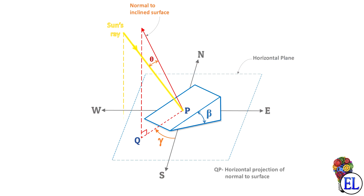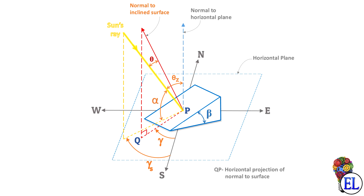Now let us represent all the angles studied in this video together. Taking the horizontal projection of the sun's ray gives the inclination angle alpha. Drawing the normal to the horizontal plane, the angle between the sun's ray and this normal is the zenith angle theta z. Marking the angle from due south to the projection of the sun's ray gives the solar azimuth angle gamma s. We can clearly confirm that if there is no inclined surface, tilt angle beta equals zero and zenith angle theta z equals the angle of incidence theta. If you have any doubts, ask in the comment section below or post your doubts through our website contact us page, whose link is provided in the description.